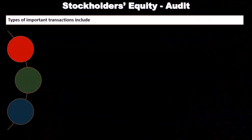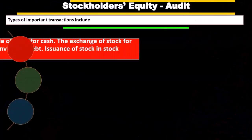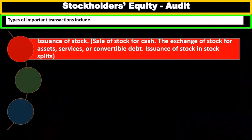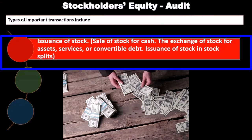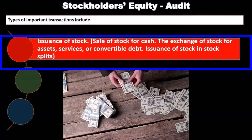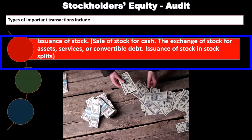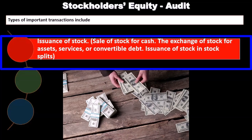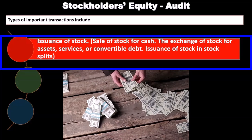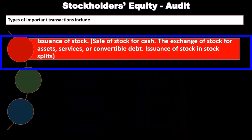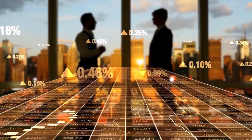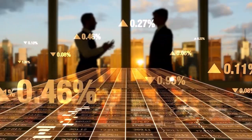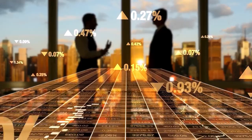Types of important transactions related to stockholders' equity will include the issuance of stock, sale of stock either for cash or the exchange of stock for assets, services, convertible debt, and issuance of stock in a stock split. One of the key components of the stockholders' equity section would be if there's an issuance of new stock.